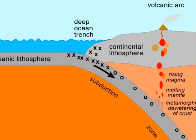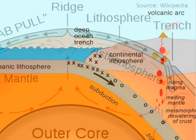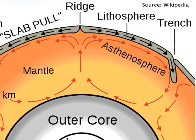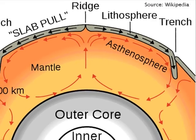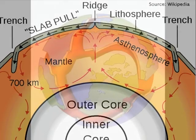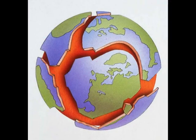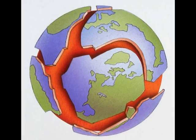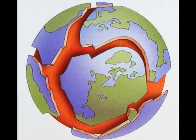Plate tectonic theory — oh, convection currents explain the motion, crashing around the entire globe, drifting away. Drift away.